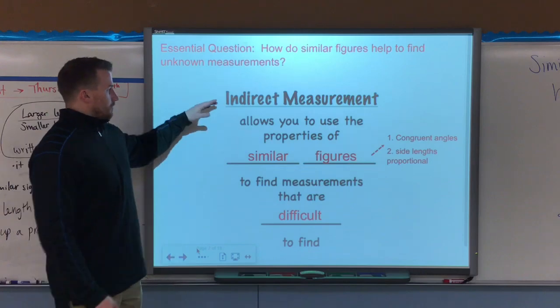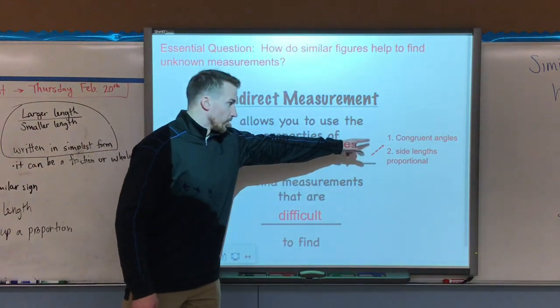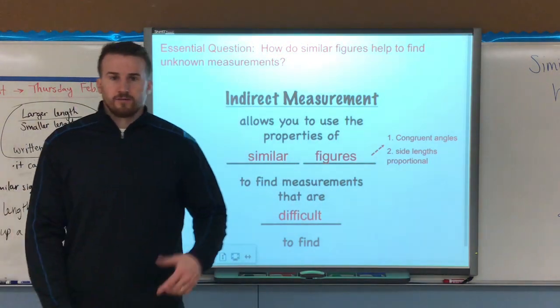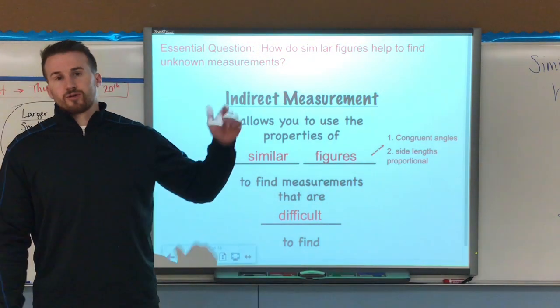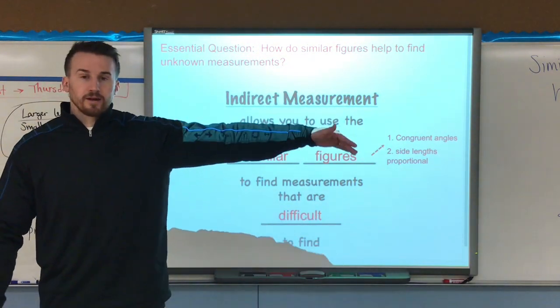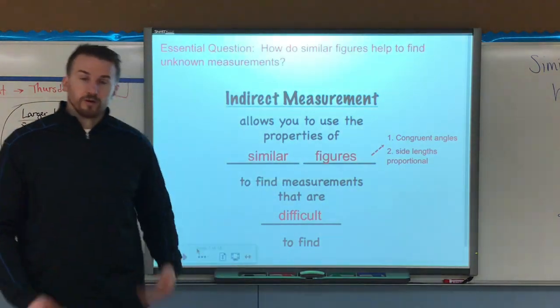Indirect measurement allows us to use the properties of similar figures, congruent angles and side lengths proportional, to find measures that are difficult to find. For example, if I'm standing next to a tree and my shadow is 4 feet long and the tree's shadow is 10, I can figure out the height of the tree by seeing that it's proportional to my height.